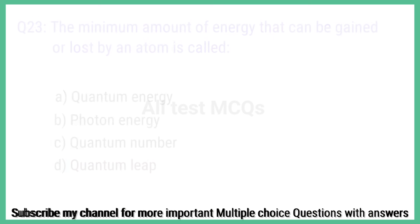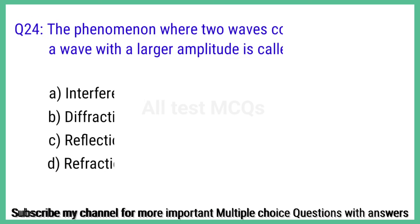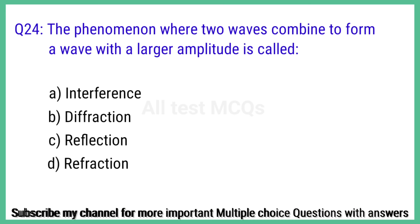Question number 24. The phenomenon where two waves combine to form a wave with a larger amplitude is called? The right answer is option A: Interference.